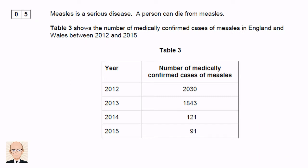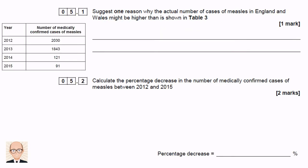This first question asks us to analyse data about the number of confirmed cases of measles between the years 2012 and 2015. We need to suggest a reason why the actual number of cases might be higher than the values shown in the table.